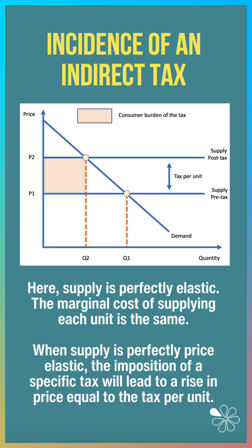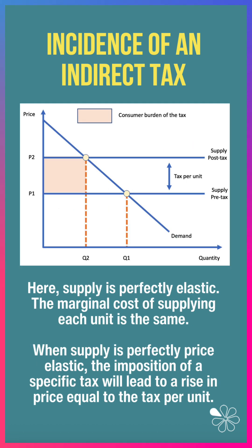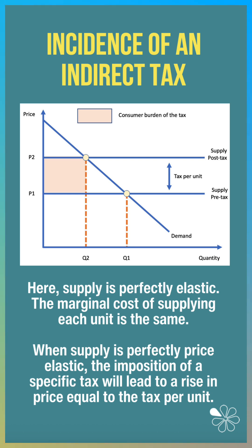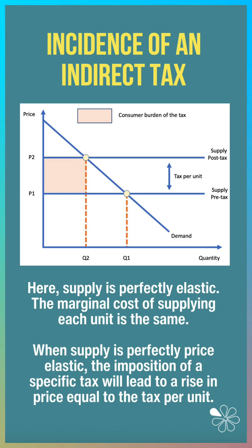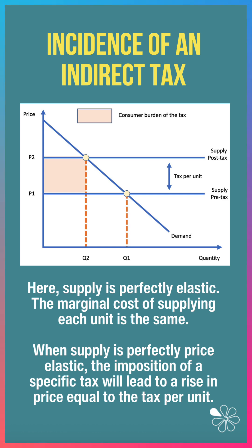In this situation supply is perfectly elastic. The marginal cost of supplying each unit is the same, and when supply is perfectly elastic, the imposition of a tax will lead to a rise in price equal to the tax per unit. The consumer will pay all of the tax.